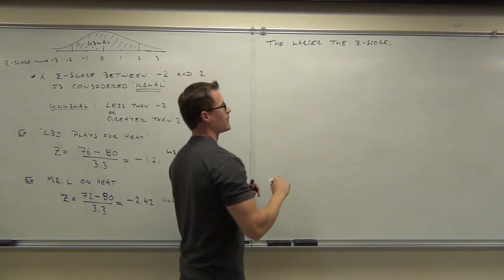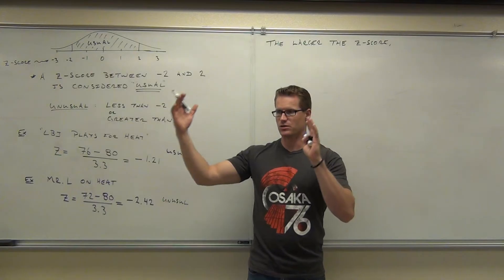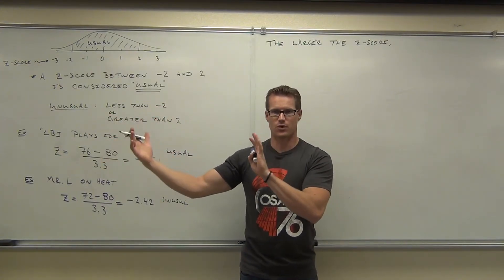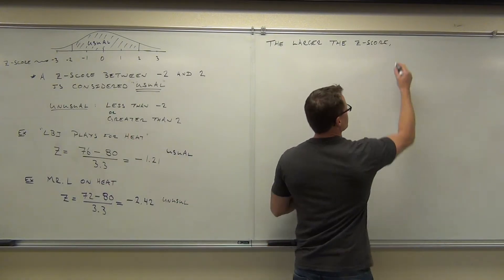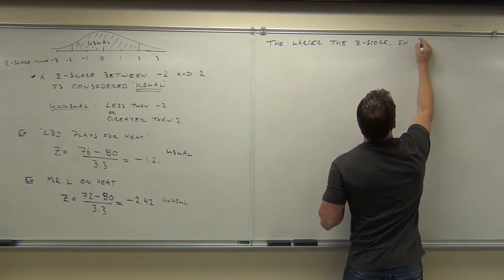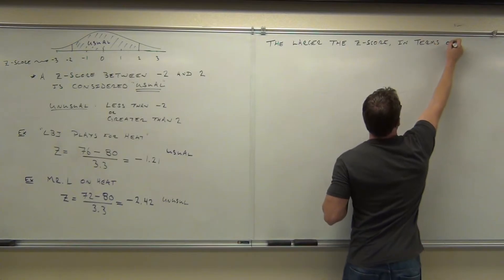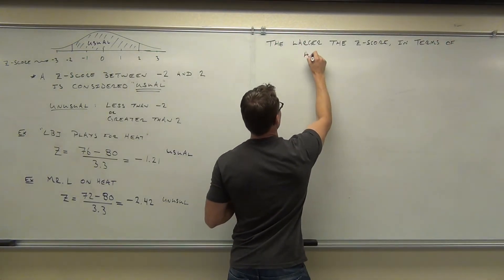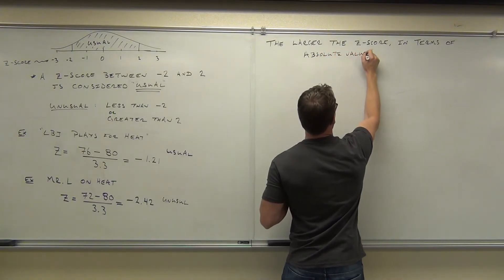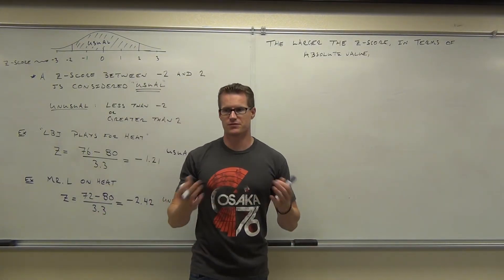The larger the Z-score we're talking about in terms of absolute value, that means just, you know, speaking away from the mean. So like a negative 4, that absolute value-wise, that's 4, right? So that would have a large Z-score. The larger the Z-score in terms of absolute value, the rarer the piece of data.